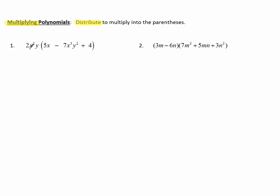So we'll take 2x²y, multiply to 5x. So 2x²y times 5x.